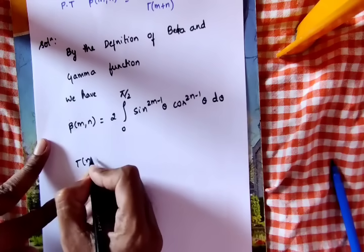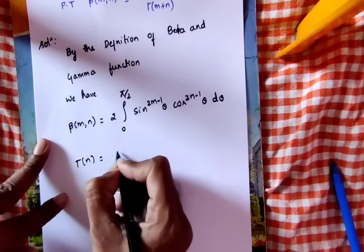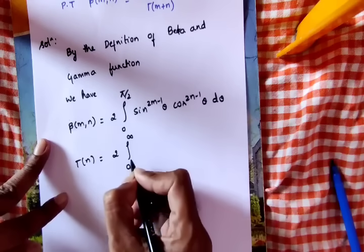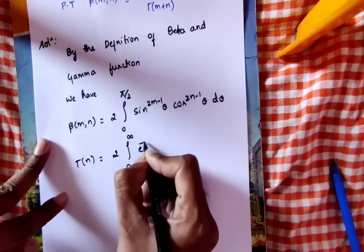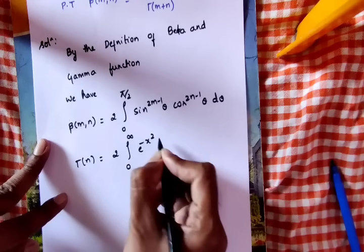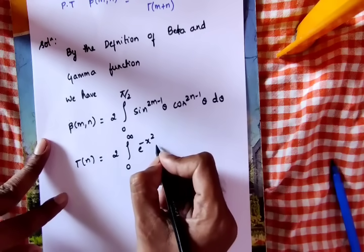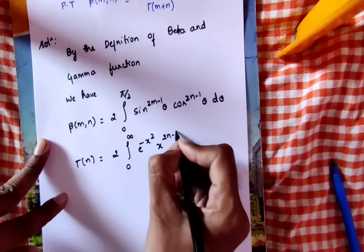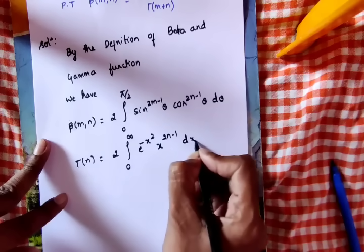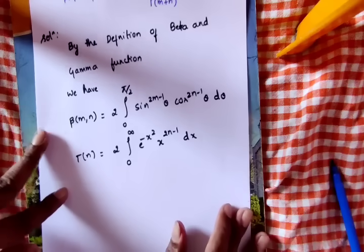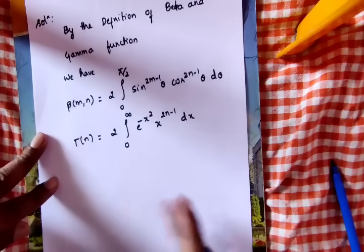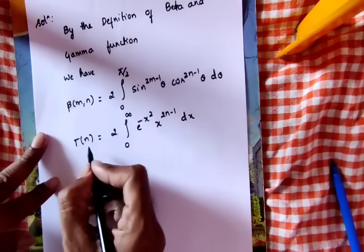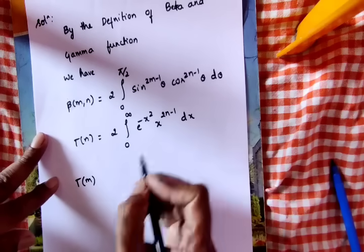Gamma(n) is equal to 2 into integral from 0 to infinity of e to the power minus x squared, x to the power (2n-1) dx. And similarly gamma(m) is defined in the same way.